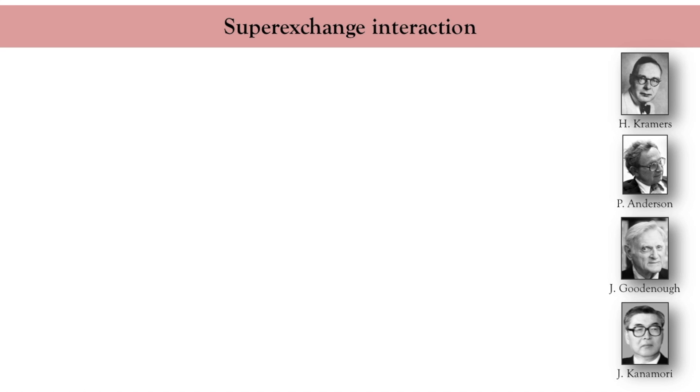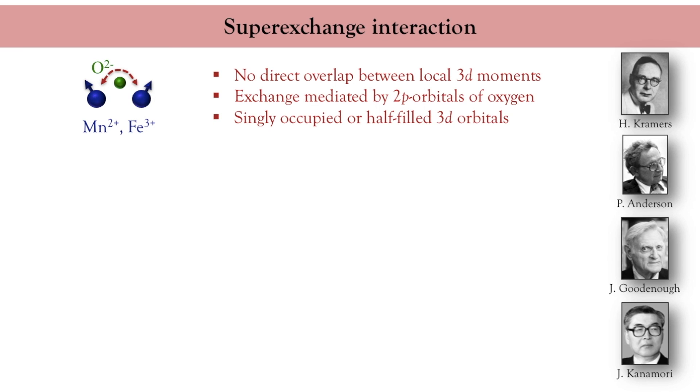Another exchange mechanism that can be found in magnetic oxides is the super exchange interaction. This one occurs when two magnetic cations of the same valence couple through an oxygen anion. So there is no direct overlap between the orbitals of the magnetic ions. The coupling is mediated by the 2p orbital of the oxygen anion.